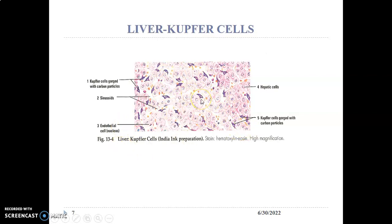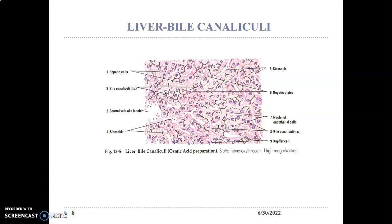Cells found in the liver include hepatocytes, endothelial cells lining the sinusoids, and Kupffer cells. The hepatocytes produce bile, which is drained into bile canaliculi. The bile canaliculi converge at the terminal periphery of the lobule to form bile ducts. The sinusoids are the rays of hepatocytes radiating from the central vein, and bile canaliculi pick up the bile that the hepatocyte has produced. Kupffer cells and endothelial cells line the sinusoids.